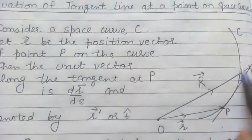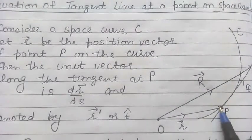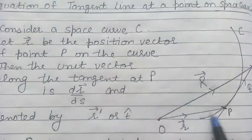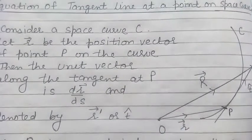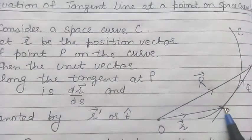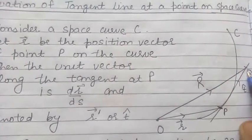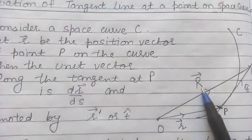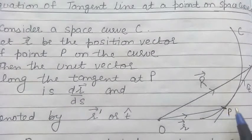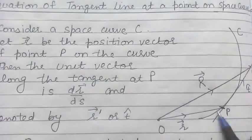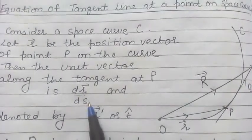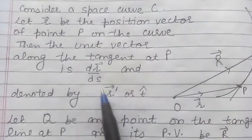Let us consider C be a space curve. P is any point on the curve C having the position vector given by vector r, and Q is a point on the tangent line drawn at point P, with position vector denoted by capital R. The unit tangent vector along line PQ is dr/ds, generally denoted by vector T-cap.